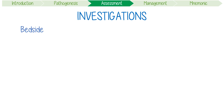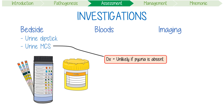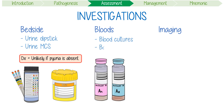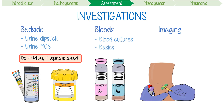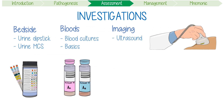To investigate, consider a structured approach including bedside tests, bloods, and imaging. Bedside tests should always include a urine dipstick followed by urine microscopy, culture, and sensitivities. You should remember that the diagnosis of acute pyelonephritis is unlikely if pyuria is absent on microscopy. Blood tests should always include blood cultures as well as some basics including a full blood count and UECs. In terms of imaging, consider an ultrasound to exclude any urinary tract obstruction or a kidney abscess.